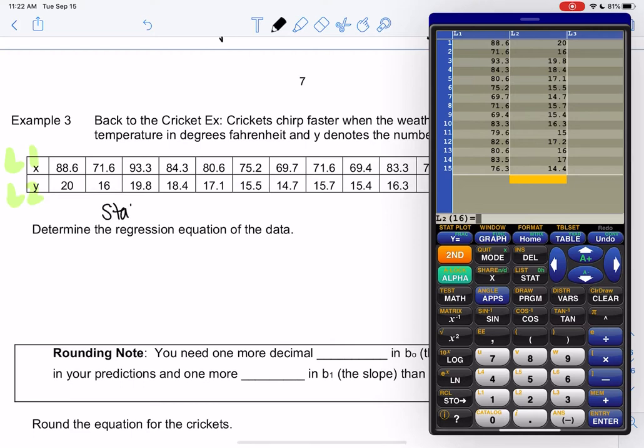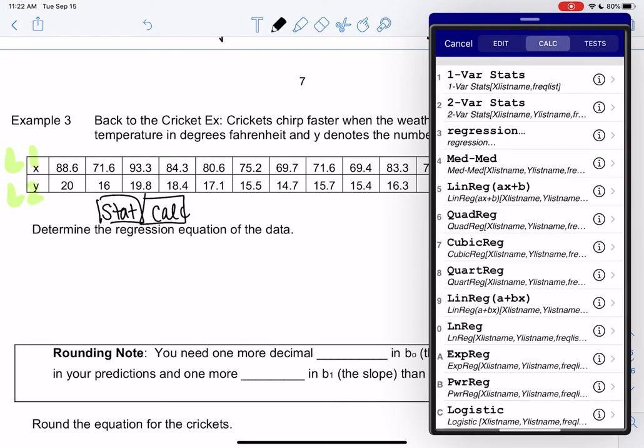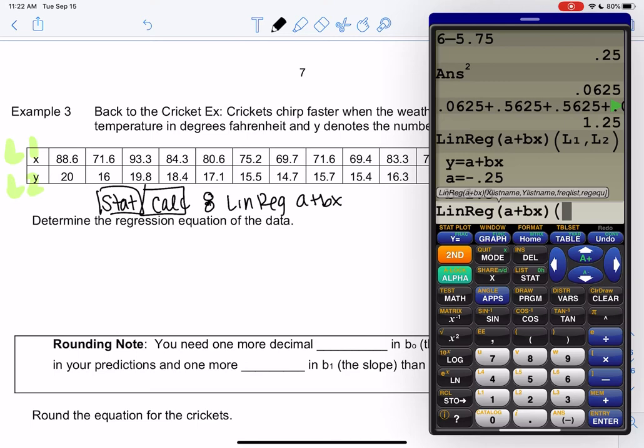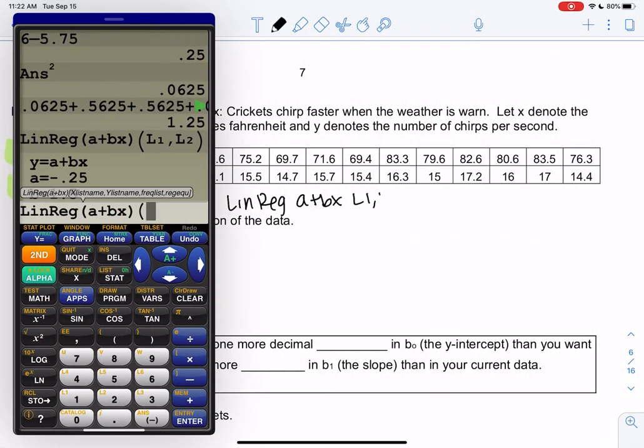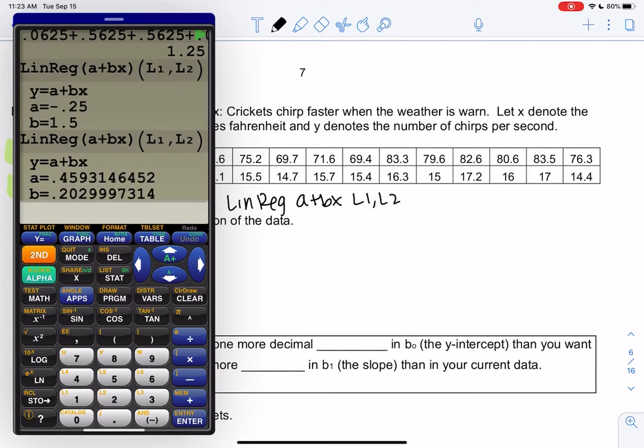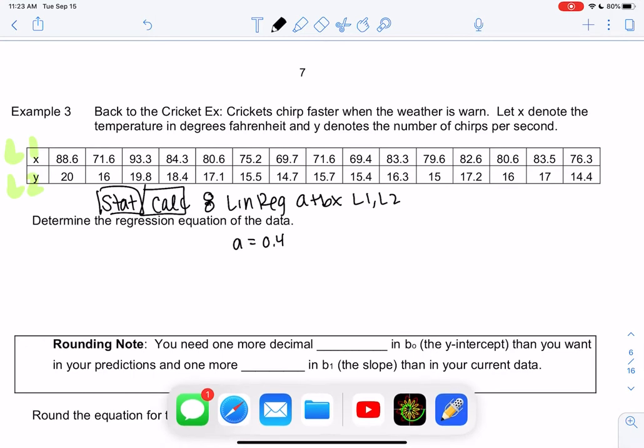And then we're going to go back to that same menu. We're going to go to stat, calculate. And then you're going to go over to the eighth one down, which is linear regression, A plus Bx. And then you're going to tell the calculator to look at L1, L2. That's how you're telling the calculator where to look. Where is my data? It's in L1 and L2. And I got A equals, I'm going to put a ton of decimal places.